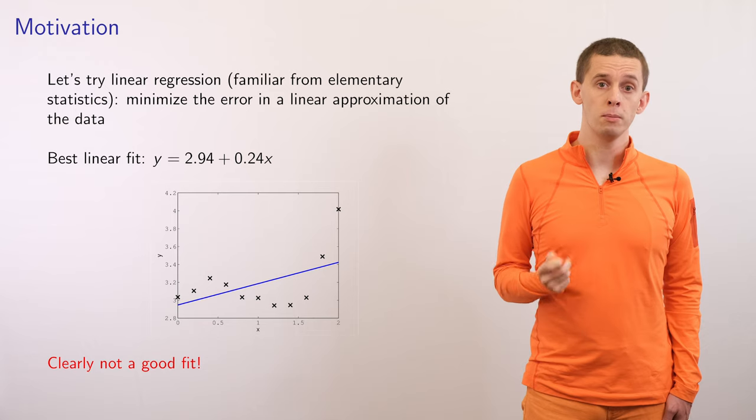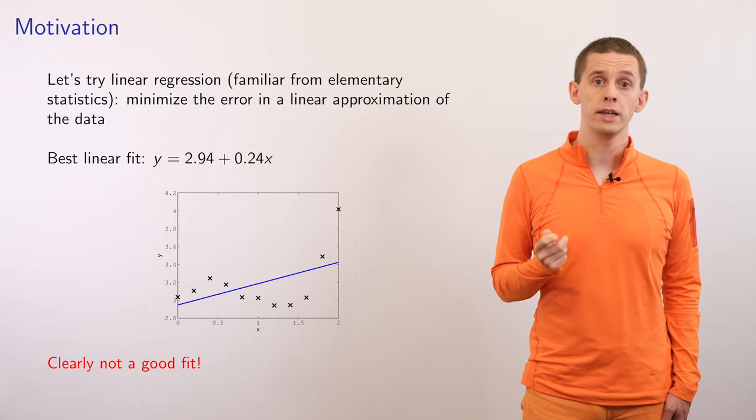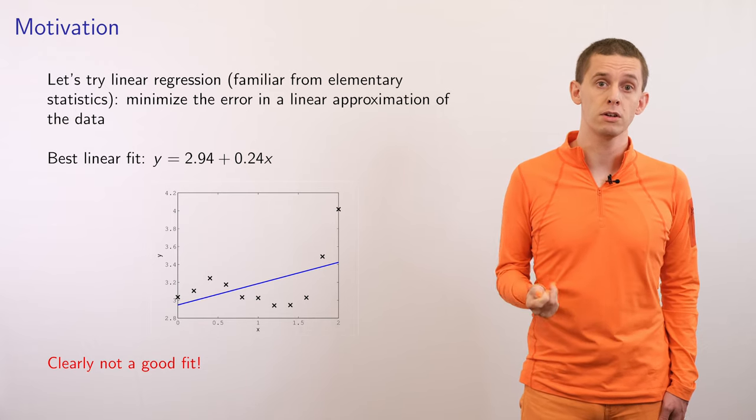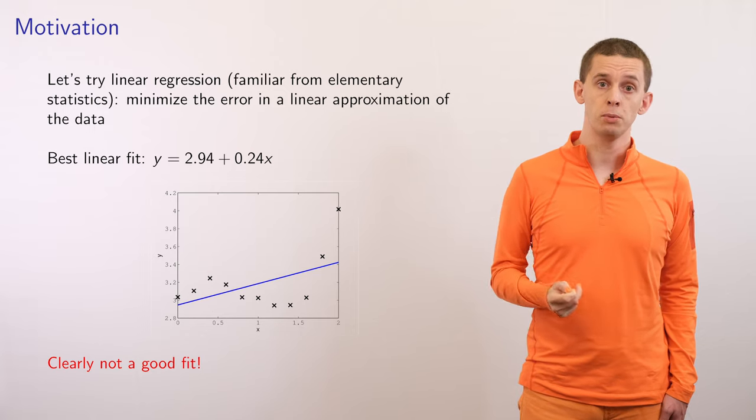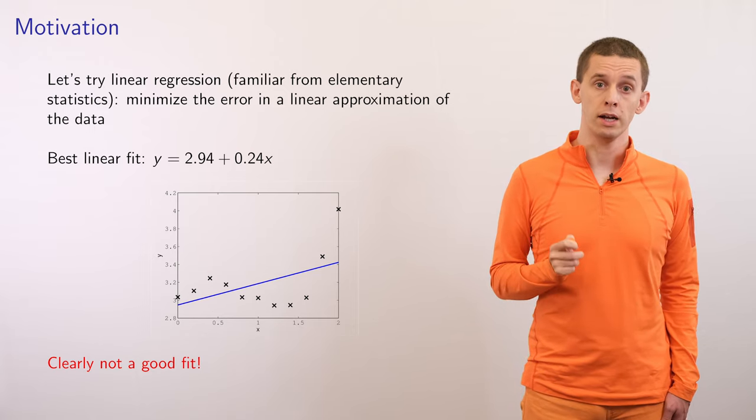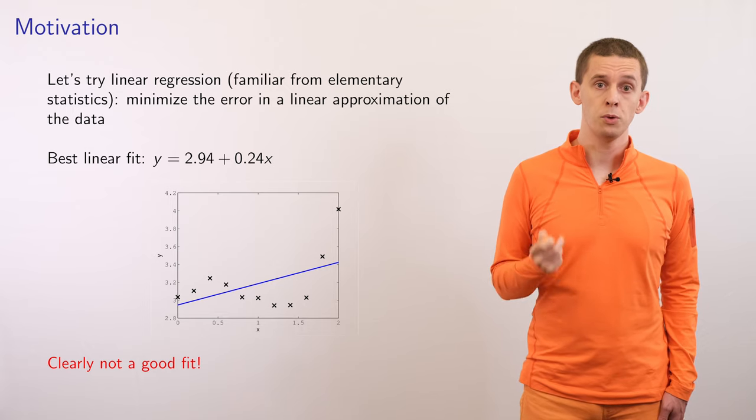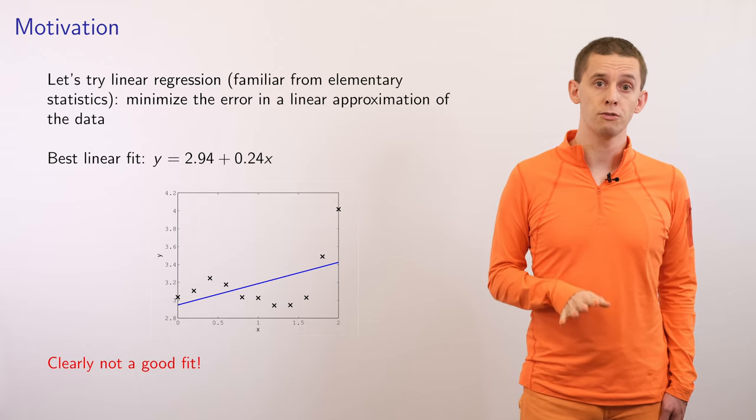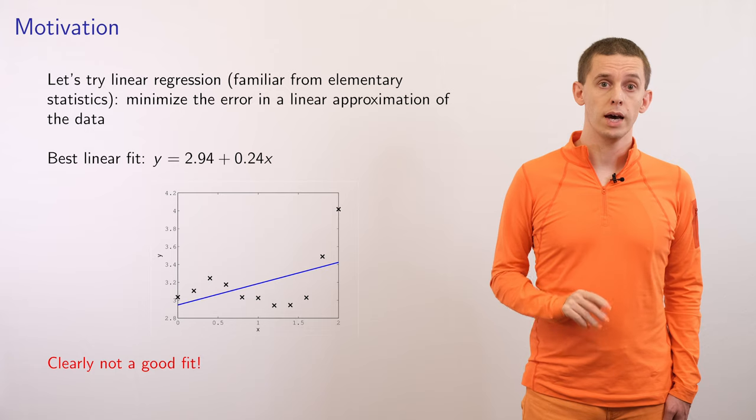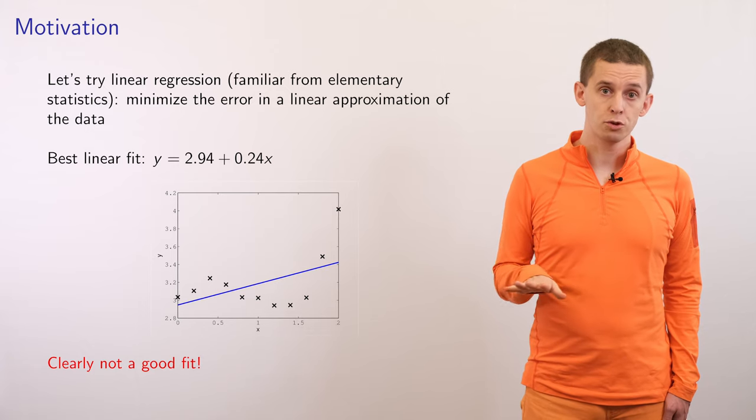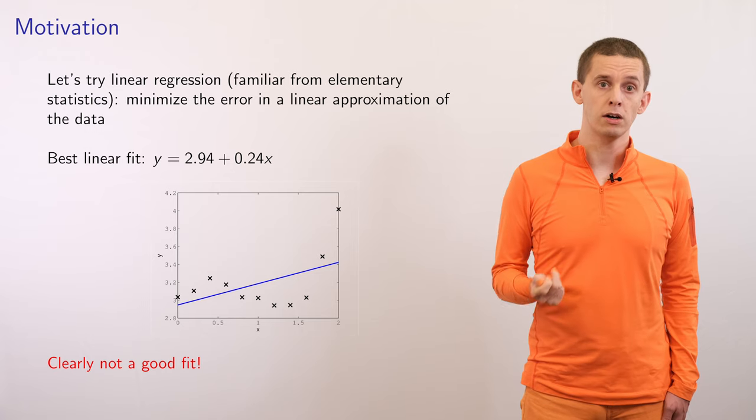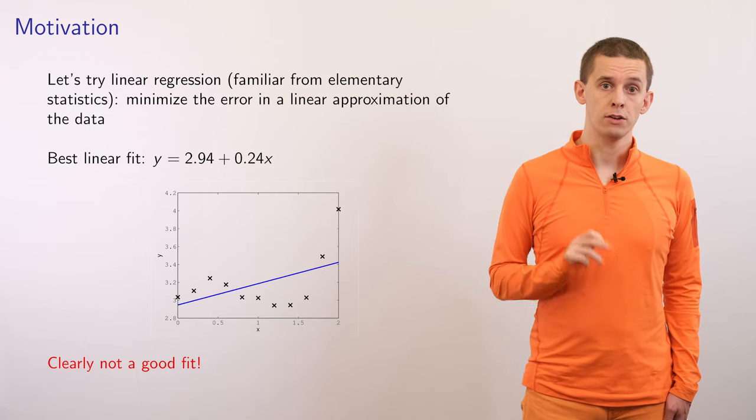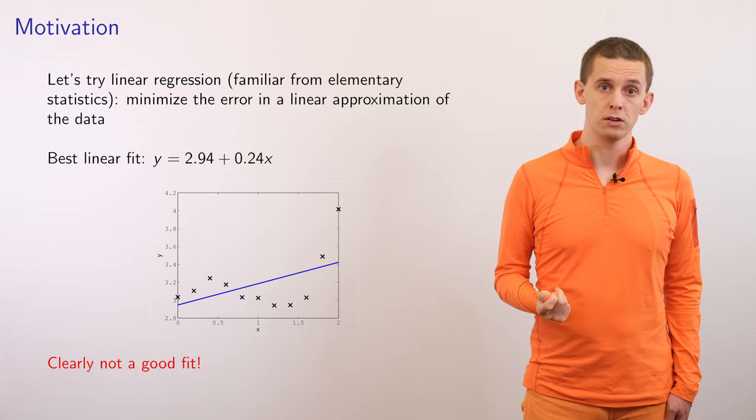The first approach that we might do here is just do linear regression that you may have seen in a statistics course. Here we try and minimize the error between a line and the given data points. If we do that, we end up with the following function. Maybe this captures some trends in our data, but we definitely see that it systematically misses a lot of the features of this data set, and so we might want to improve on this.